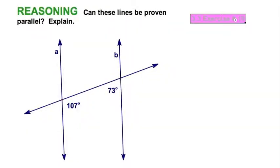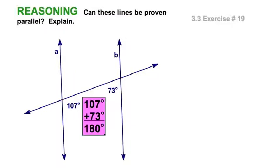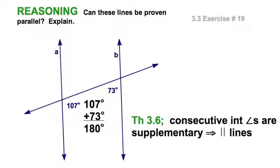Well, here's an easy one. Number 19, are A and B parallel. Let's just add those angles together. And that's going to tell me, yes, consecutive interior angles are supplementary. That makes A and B parallel.